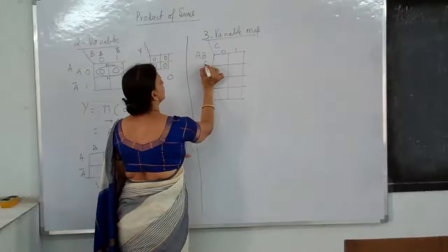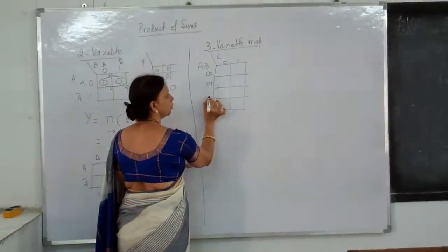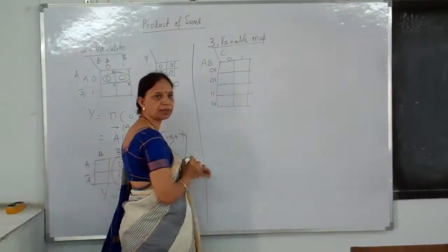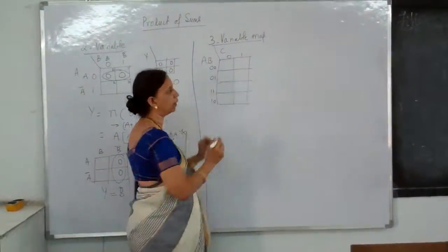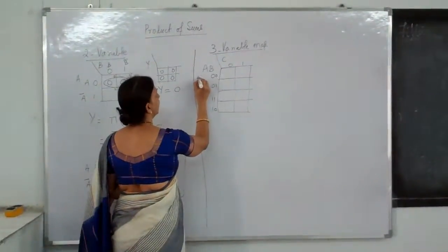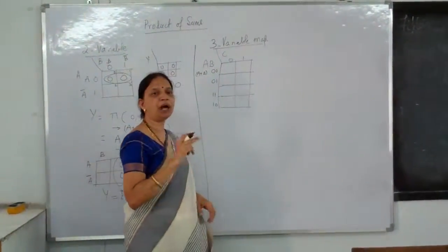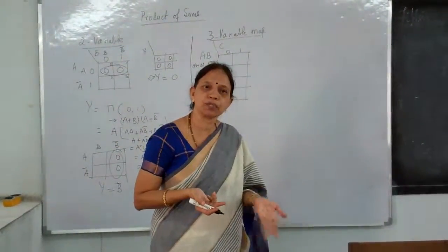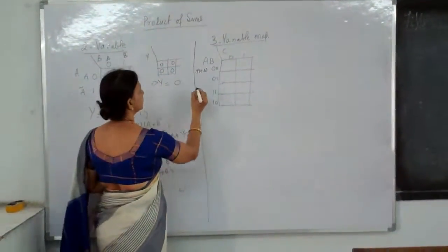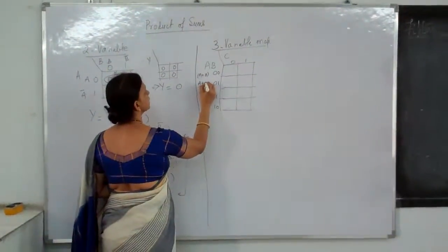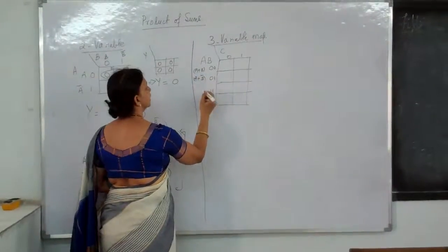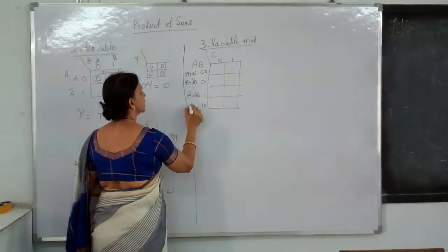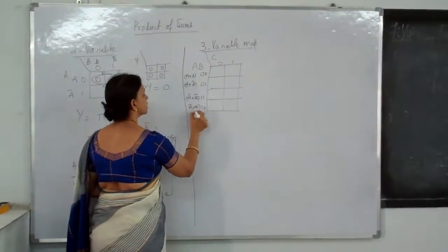So now let's take 3 variables. This side is written as AB and this side as C. C can take values 0 and 1. For AB: 00, 01, 11, 10. Earlier you wrote 00 as A-bar·B-bar; now in POS you write it as (A + B). A-bar·B-bar complement is A + B. This gives (A + B), (A + B-bar), (A-bar + B-bar), (A-bar + B-bar) for the respective entries.